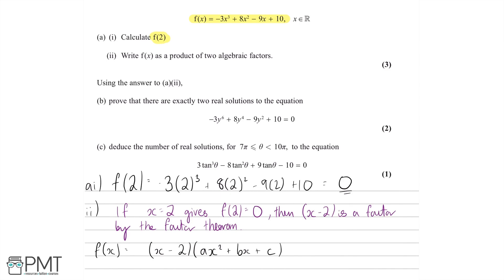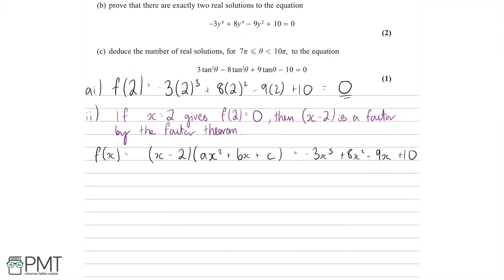Now the question becomes: what are a, b, and c? We know that f of x still equals minus 3x cubed plus 8x squared minus 9x plus 10. So we can compare coefficients. In terms of the x cubed coefficients, we're going to have x times ax squared, giving ax cubed on the left-hand side, and on the right-hand side we have minus 3x cubed. Therefore a is going to be minus 3.